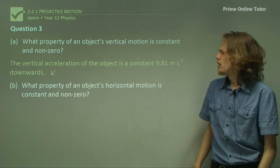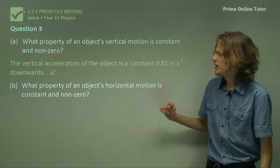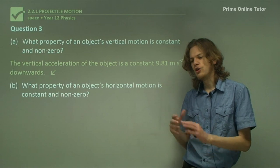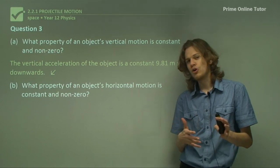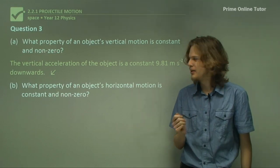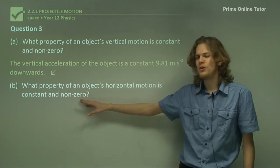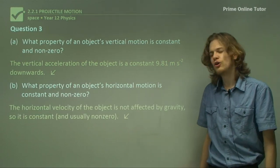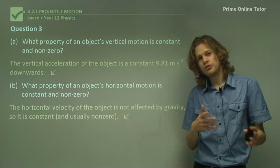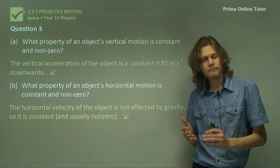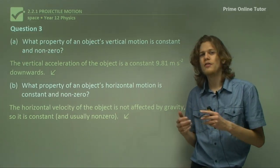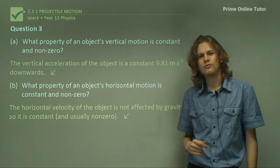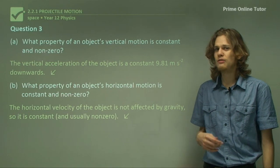Part b. What property of an object's horizontal motion is constant and non-zero? It turns out that horizontal motion has more than one constant. It has constant acceleration of zero, but that won't answer the question. In fact, the constant answer here is its horizontal velocity. The horizontal velocity isn't affected by gravity, and if it's a true projectile and there are no forces acting on it other than gravity, then the horizontal motion of the object will be constant and usually non-zero.